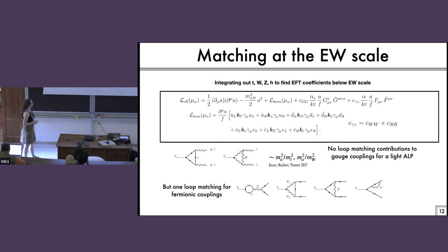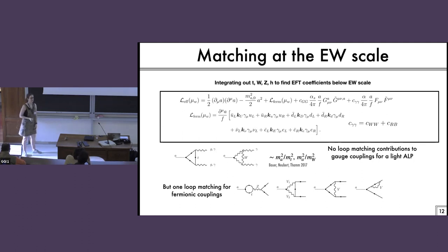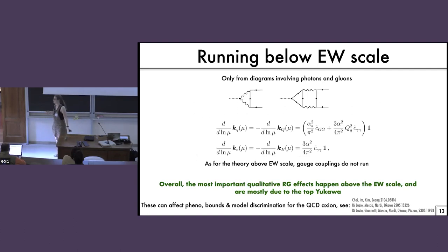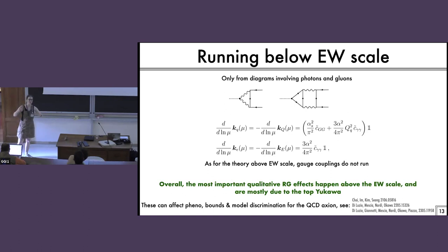You get no extra matching contributions to the gauge coupling, or at least if you do they're suppressed by m_l squared over m_top squared. But you do get extra contributions to the fermionic coupling, which gives you some finite pieces to your flavor-changing parts. Then we need to run below the electroweak scale. Here we only have things from diagrams involving photons and gluons. There were a lot of pieces above the electroweak scale where the top Yukawa mattered, but now there is no top Yukawa, so it's all a bit uninteresting. Overall, the most important qualitative RG effects — by which I mean you generate qualitatively new couplings — happen above the electroweak scale.